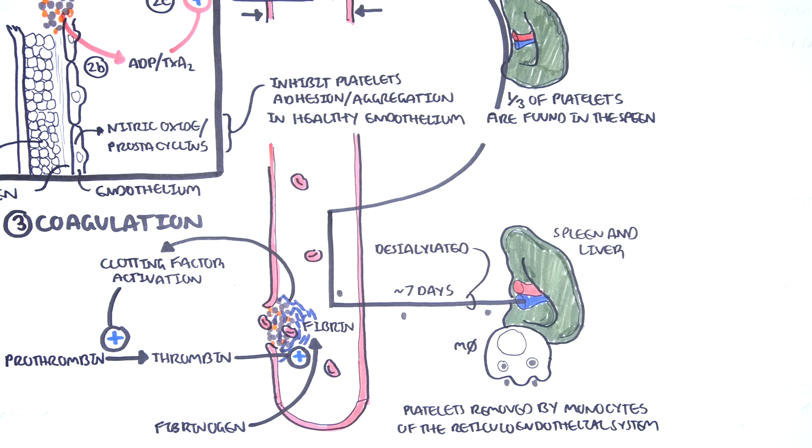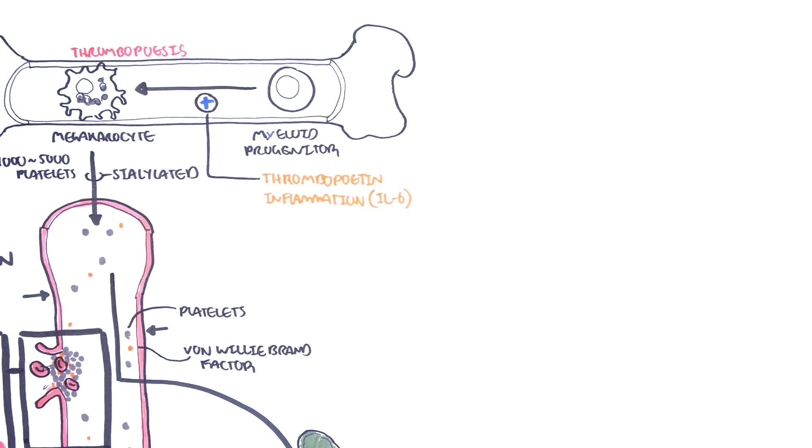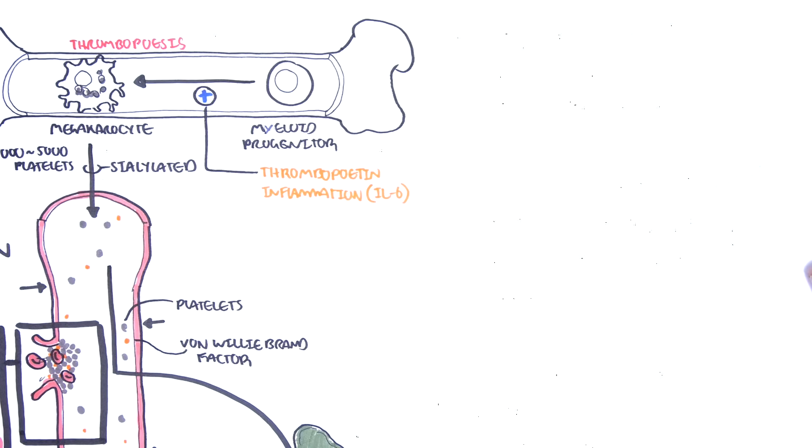Using this simple diagram of the platelet's life cycle, we can categorize and understand how thrombocytopenia occurs. Many conditions can cause thrombocytopenia. Let's look at some of these.